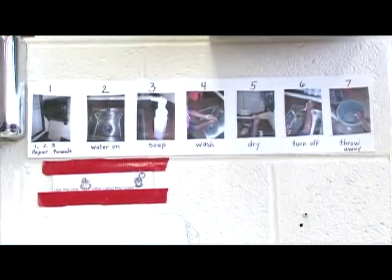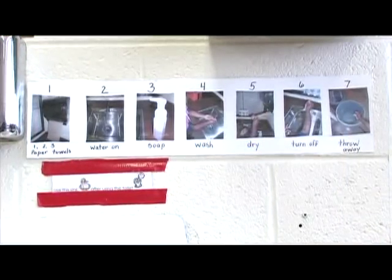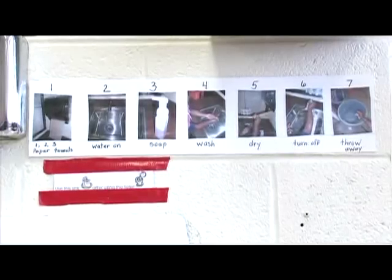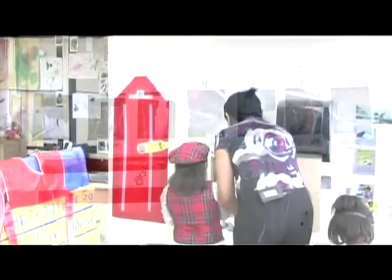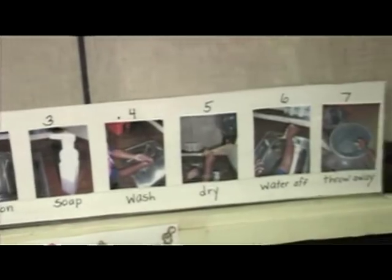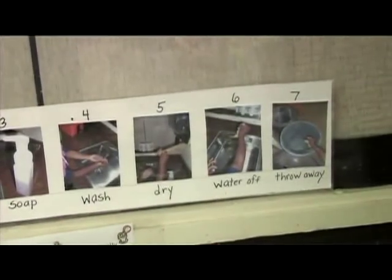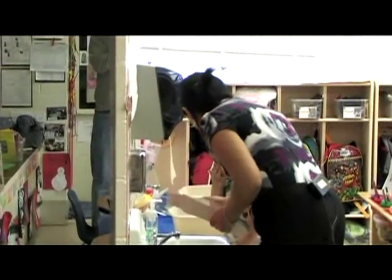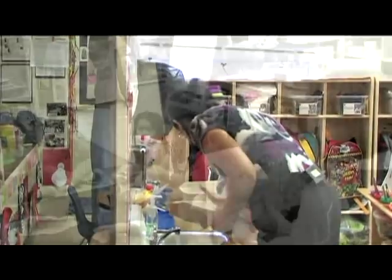Other strategies to help children learn about good health practices include visual cues. This hand washing chart was created by the children in the classroom at the beginning of the school year. The teacher uses it to help children remember the steps involved. Maria uses verbal reminders to ensure this child follows all of the steps.